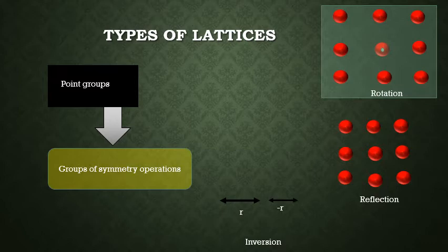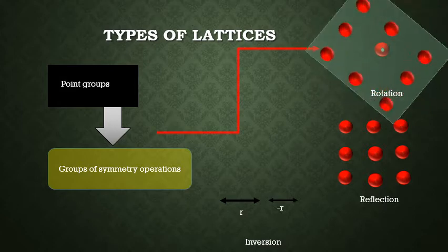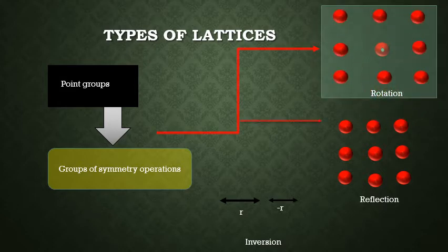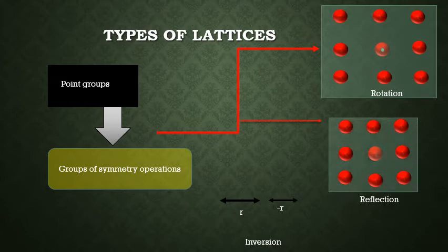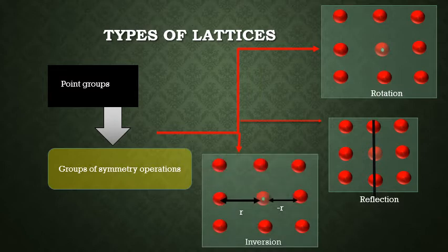Symmetry operations such as rotation about the point. Reflection symmetry indicates a plane in the lattice which divides the lattice into two identical halves, which are mirror images of each other. In inversion operations, each point located at R has an identical point located at minus R relative to the same lattice point.